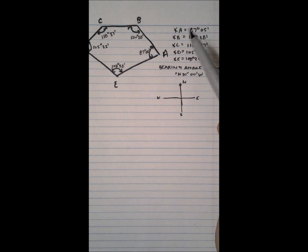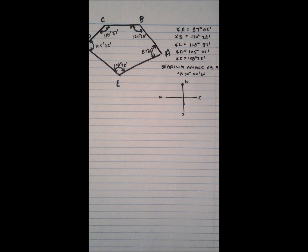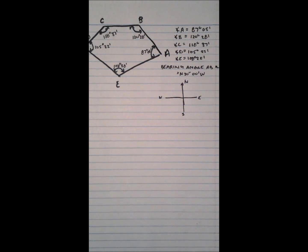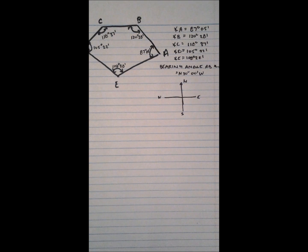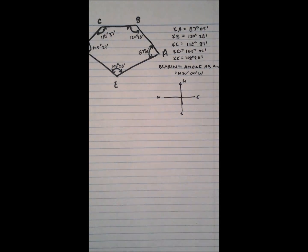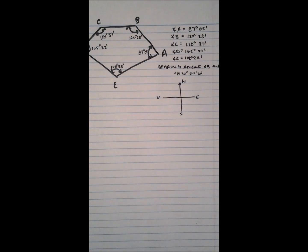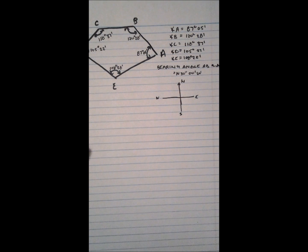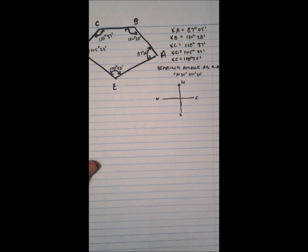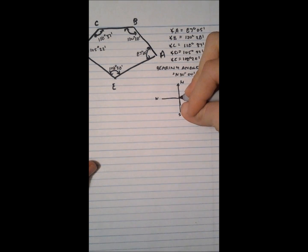Here we have a closed traverse and we are given the interior angles as well as the bearing angle of AB, which is 30 degrees west of north. What we want to do first is convert that bearing angle into an azimuth, so we're going to draw it in here.